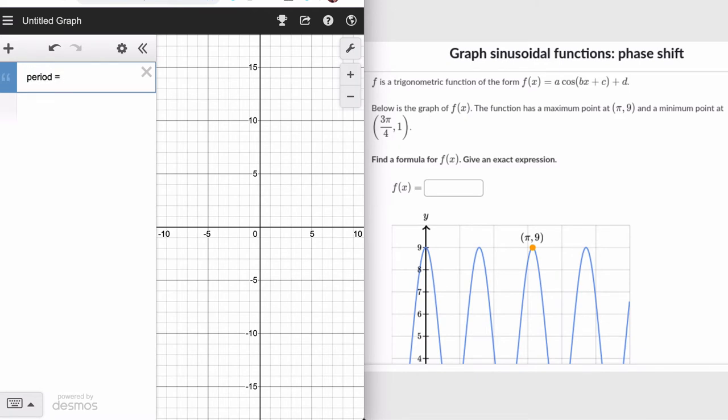First of all, we need to find the period of the function. It's a cosine function. It tells us there's a maximum at pi/9. Here it is, pi/9. And a minimum at the point 3pi/4, 1. So what we can do is look at the distance between pi and then its minimum.